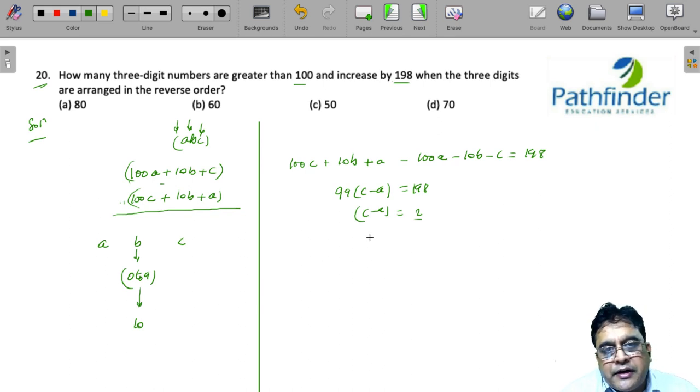what about the units and hundreds digit? They differ by 2. So if the unit digit is 1, the hundreds digit will be 3. If unit digit is 2, hundreds digit must be 4. If the unit digit is 3, the hundreds digit must be 5.